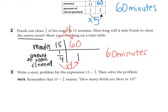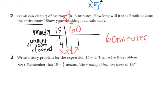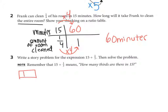Number 3 asks me to write a story problem for the expression 15 divided by one-third, then solve the problem. Remember that 15 divided by one-third means how many thirds are there in 15. My story problem: Mrs. Dunlap has 15 chocolate bars. She wants to split each chocolate bar into thirds. How many thirds will Mrs. Dunlap have when she splits her 15 chocolate bars into thirds? Here's a chocolate bar split into thirds — another chocolate bar split into thirds. If I did that 15 times, how many thirds would I have?